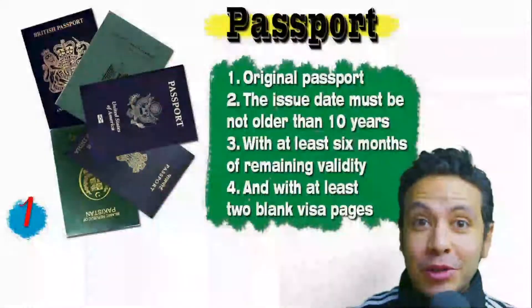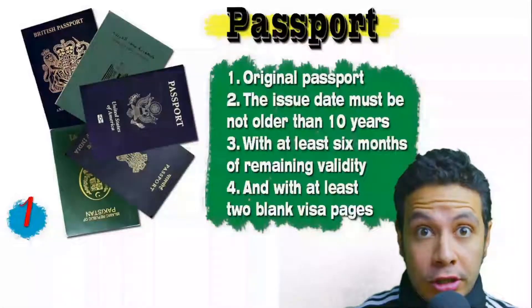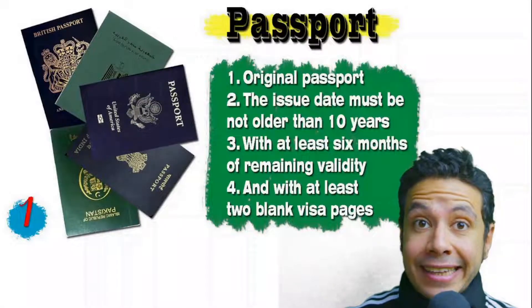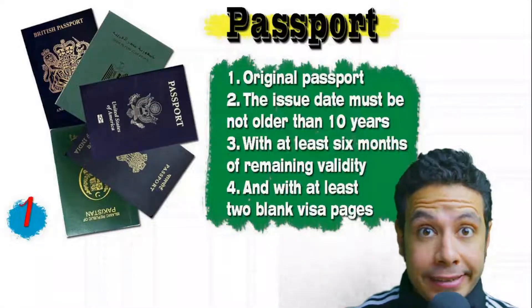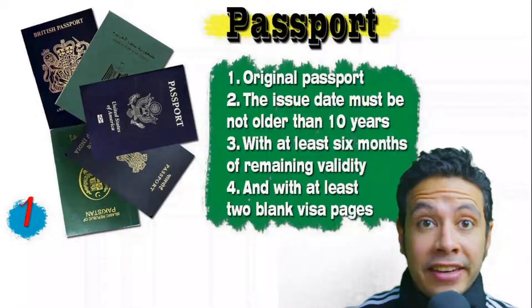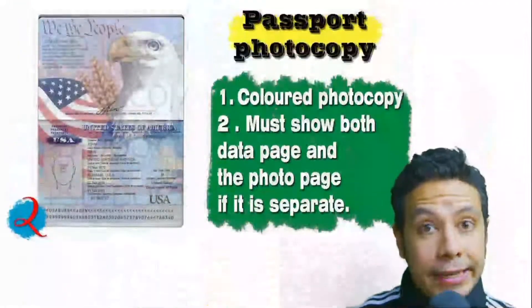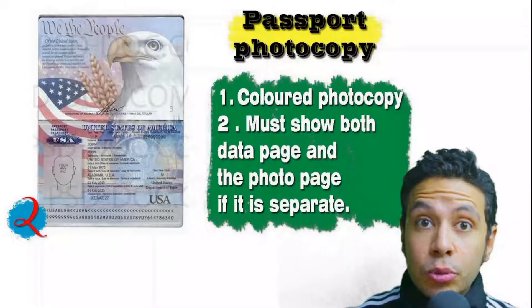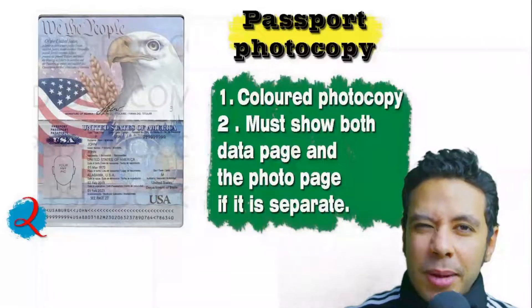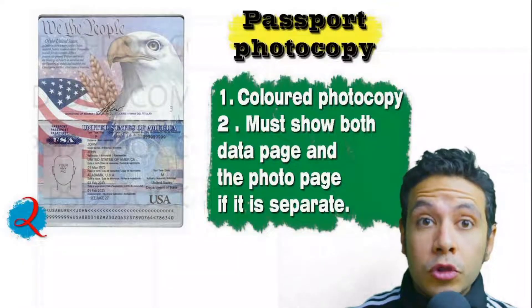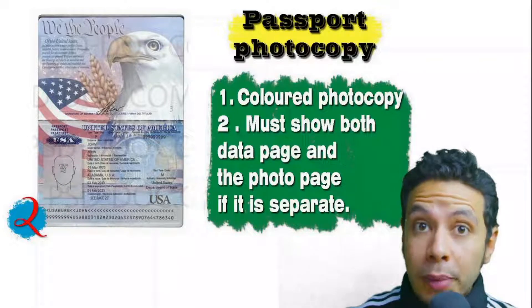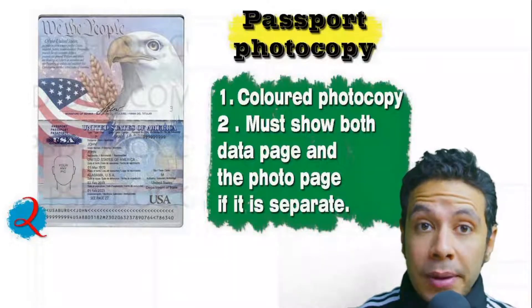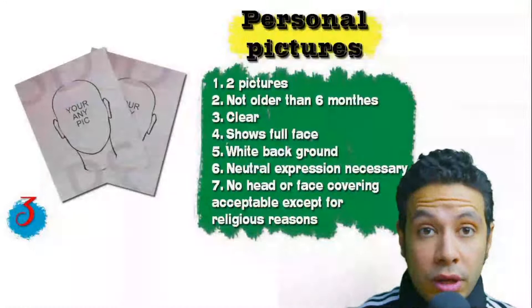Speaking about the required documents — for your passport, it must be original, not older than 10 years, with at least six months of remaining validity and at least two blank visa pages for stamps. In many cases you will also need a photocopy of your passport — it is preferred to be colored, showing both the data page and photo page. In some cases you might be required to photocopy every single page, but generally only the data page and photo page are needed.